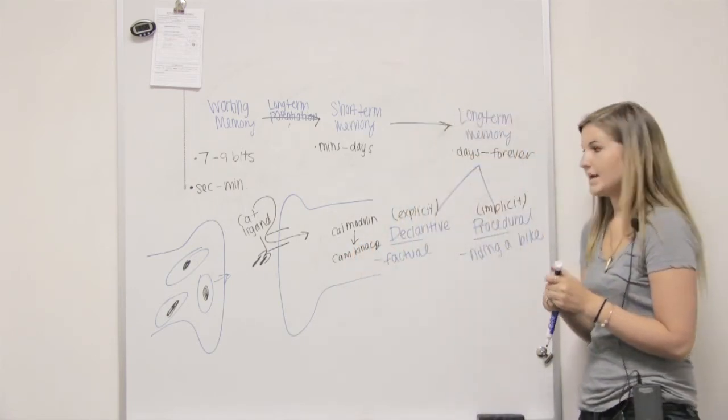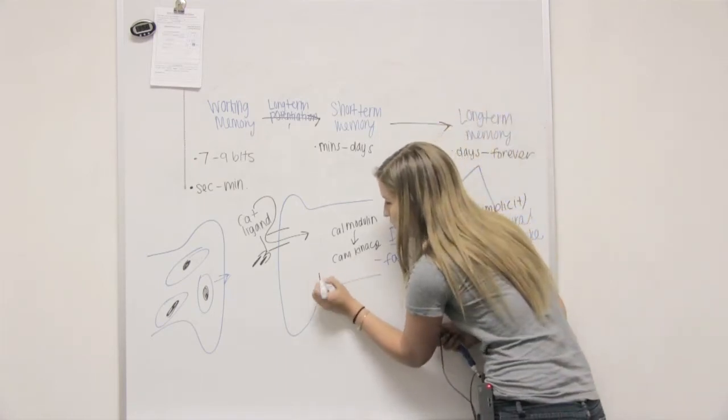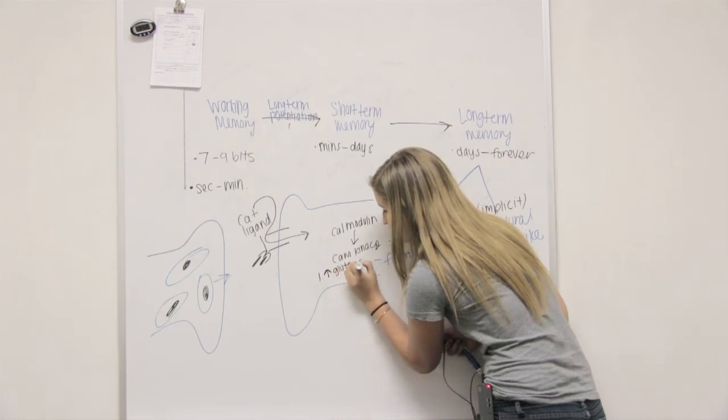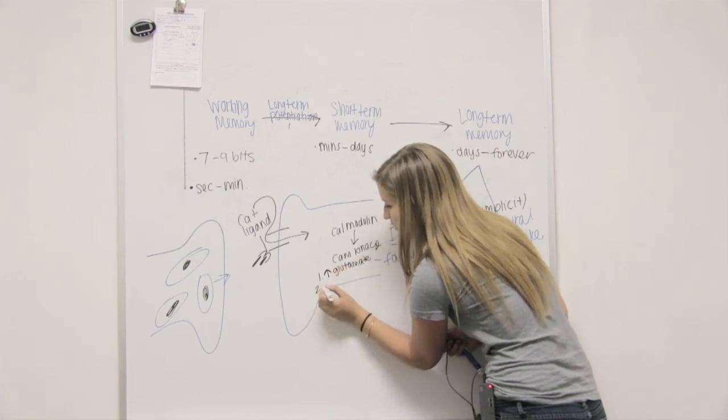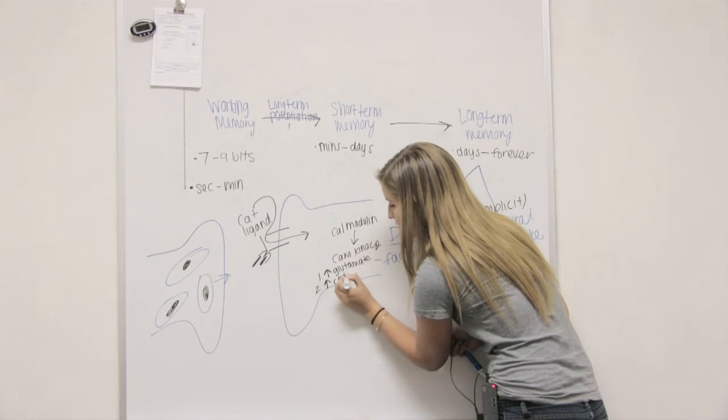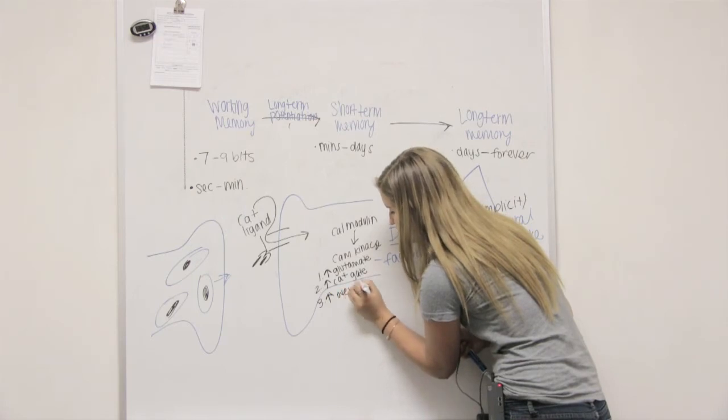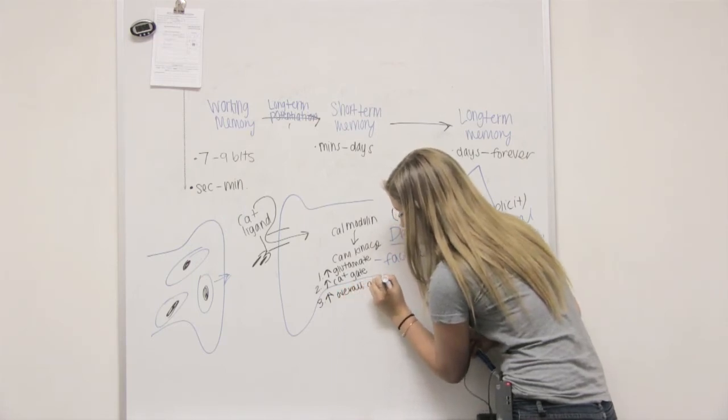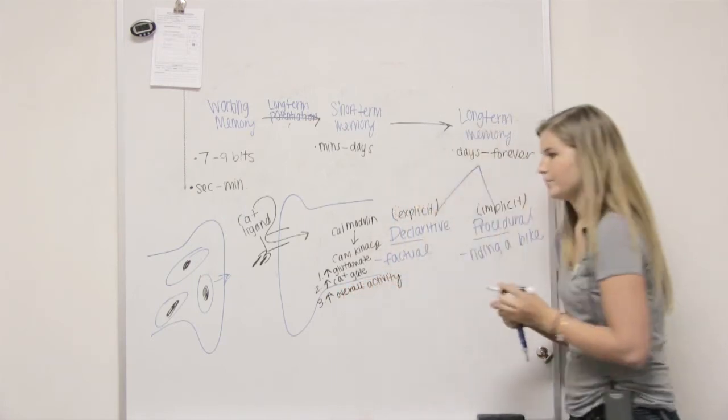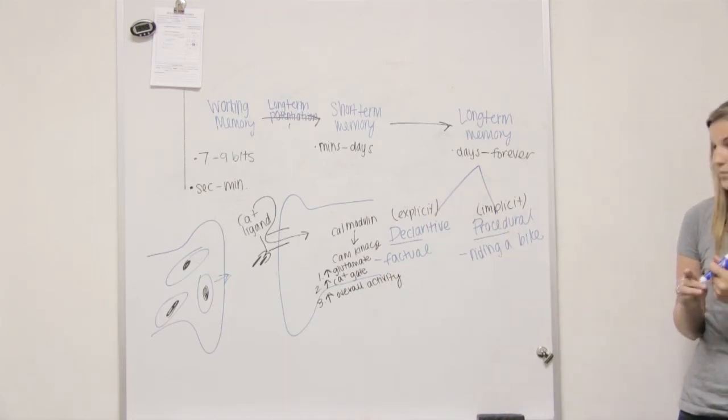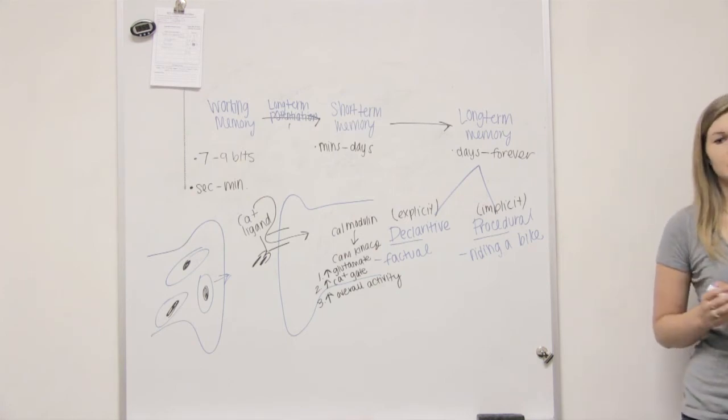And cam kinase has three functions. One, more glutamate will be released. Two, more calcium gates will be made. And three, more overall activity. Okay. So that's called long-term potentiation.